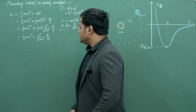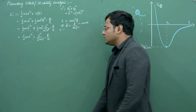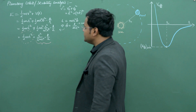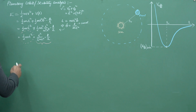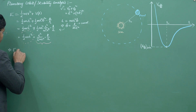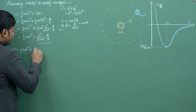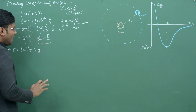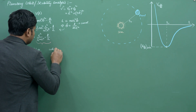Looking at this expression, the first term contains ṙ — the radial speed — while the remaining two terms are functions of r only. So we can write the total energy as E = ½mṙ² + V_eff(r), where V_eff is the effective potential energy, defined as V_eff = l²/(2mr²) − k/r.